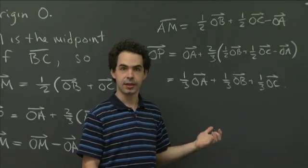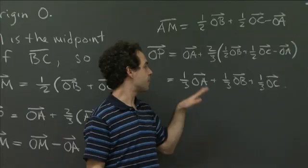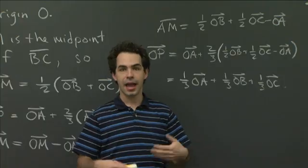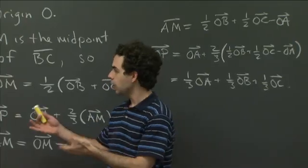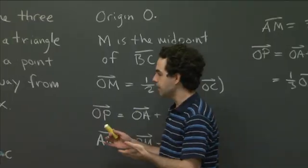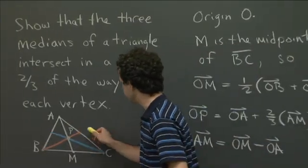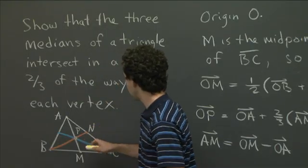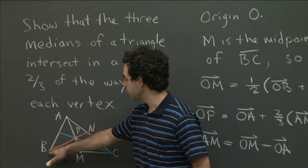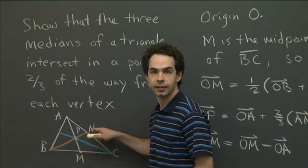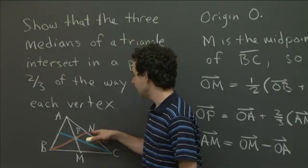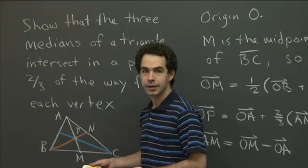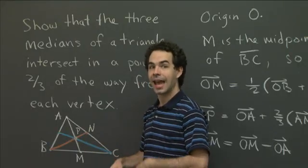That's where P is. Now to finish the problem, I just have to show that this is the same location as the point that trisects the other medians. How would I do that? I could go back to my triangle, and I could do exactly the same thing. Maybe I'll give this point a name also. I'll call this midpoint N. I could let Q be the point that lies two-thirds of the way from B to N, and then I could write down the position vector of N in terms of OA, OB, and OC, and then I could use that to write down the position vector of Q in terms of OA, OB, and OC, and I'll get some expression.